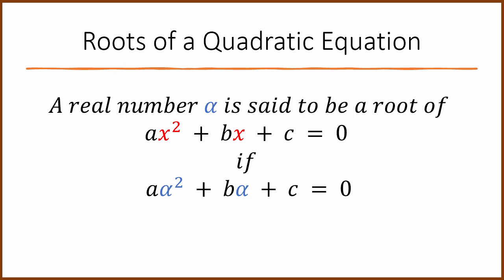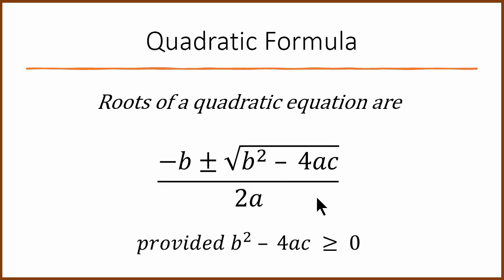A quadratic equation will have roots. What are roots? A real number alpha is said to be a root if you substitute alpha in place of x and the equation becomes 0. This is the standard quadratic formula: minus b plus or minus square root of b squared minus 4ac, divided by 2a. There are two roots — one using plus and one using minus.